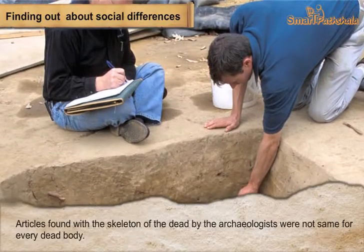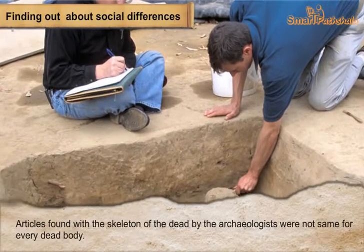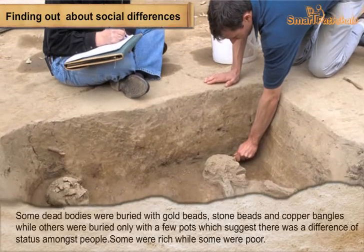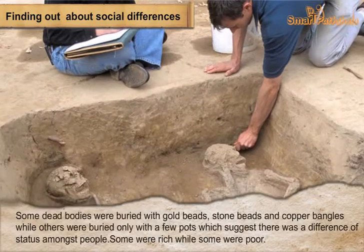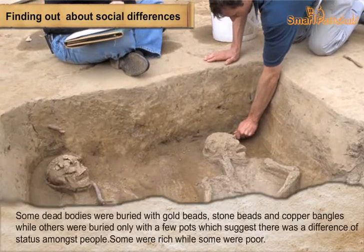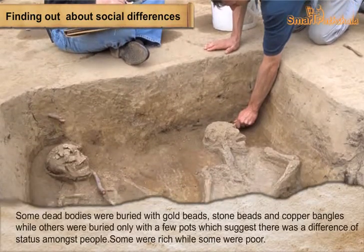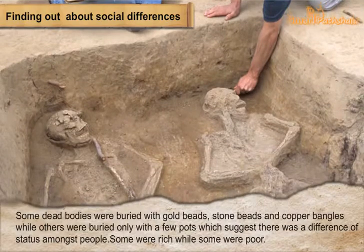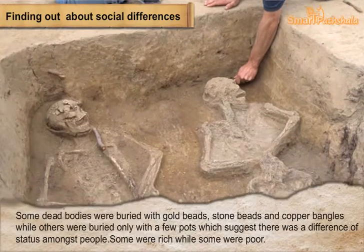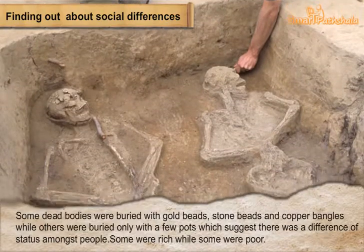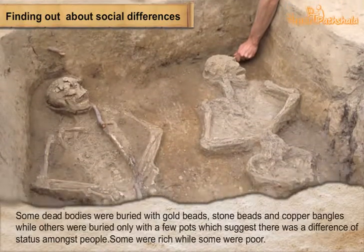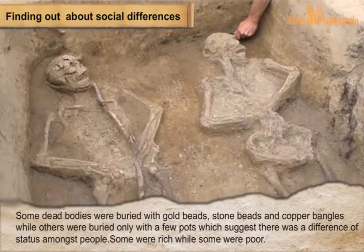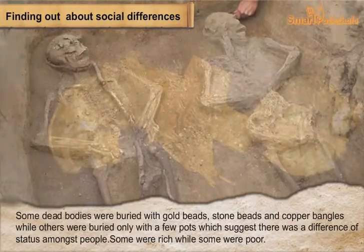Finding Out About Social Differences. Articles found with the skeletons of the dead by archaeologists were not the same for every dead body. Some dead bodies were buried with gold beads, stone beads and copper bangles, while others were buried only with a few pots, which suggests there was a difference of status amongst people.